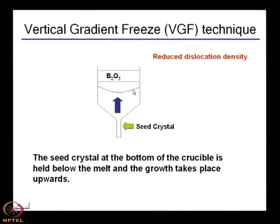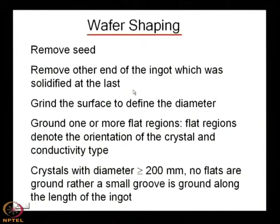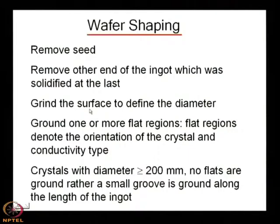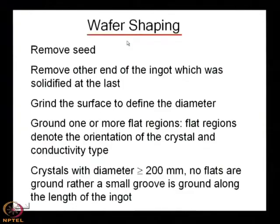The next process after crystal growth is wafer processing. We grow a bulk crystal known as an ingot, which is basically the freezing of the whole melt. It can be one to two feet or more in length, with different diameters — 100 mm, 200 mm, 300 mm. From that ingot, wafer shaping is done.